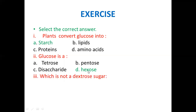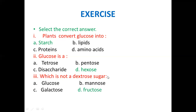Number three: which is not a dextrose sugar? A sugar that rotates plane polarized light in a clockwise direction is called dextrorotatory and also called a dextrose sugar. Glucose, mannose, and galactose are dextrose sugars — they rotate plane polarized light toward the right or in a clockwise direction. But fructose is a monosaccharide that does not rotate plane polarized light toward the right, so it is not a dextrose sugar. This rotation depends on the structure of the compound.